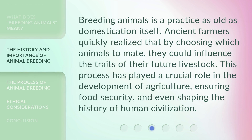Breeding animals is a practice as old as domestication itself. Ancient farmers quickly realized that by choosing which animals to mate, they could influence the traits of their future livestock. This process has played a crucial role in the development of agriculture, ensuring food security, and even shaping the history of human civilization.